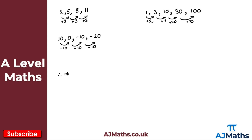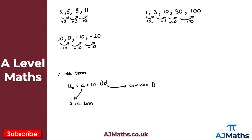Now we also need the nth term for an arithmetic sequence. The nth term is given as: u_n = a + (n − 1) × d. Here, a represents the first term in our sequence, and d represents the common difference — that is, how much we add or subtract within our arithmetic sequence. This is just a recap of GCSE material, so it should be nice and straightforward.